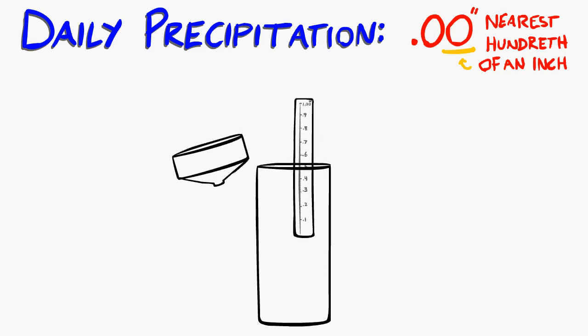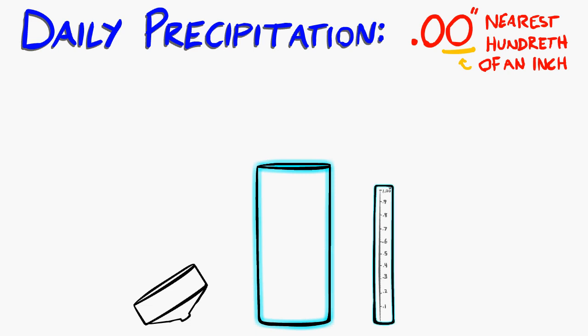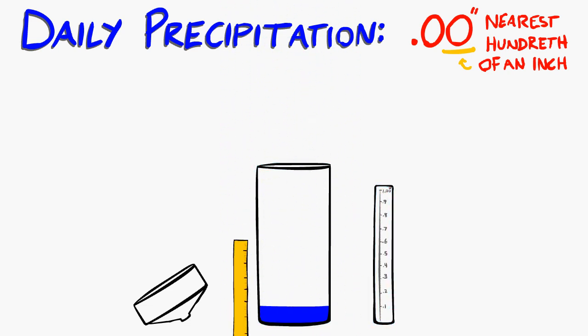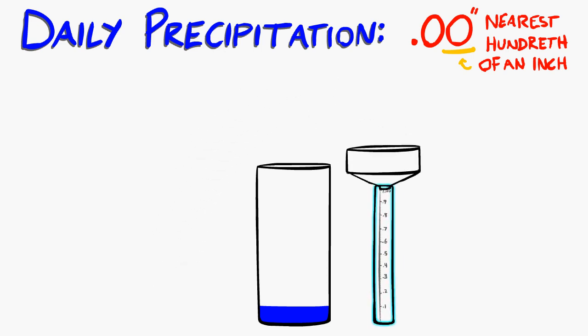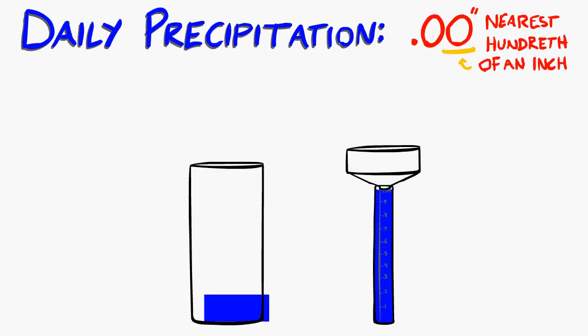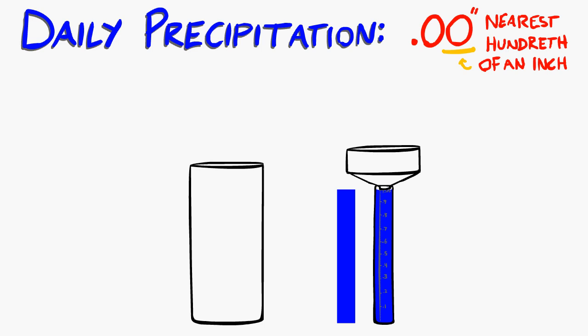You may have noticed that your rain gauge has both an outer and inner cylinder. When water falls into the outer cylinder, it would be extremely difficult to measure the depth with accuracy. The inner tube acts as a magnifier. By squeezing the water into this smaller diameter inner tube, it stretches the measurement out in order to see the depth to the nearest hundredth of an inch.